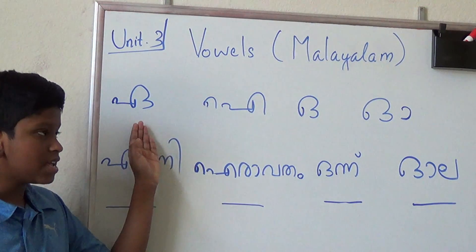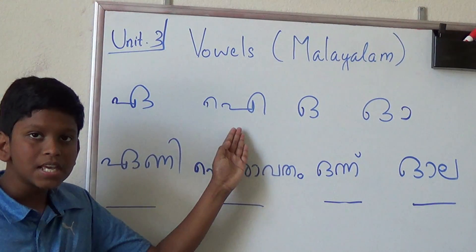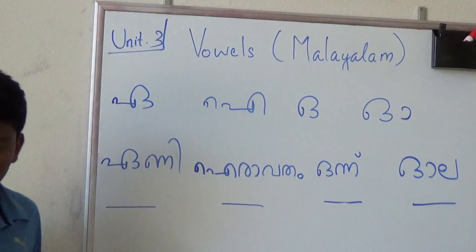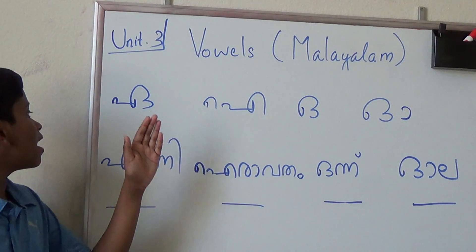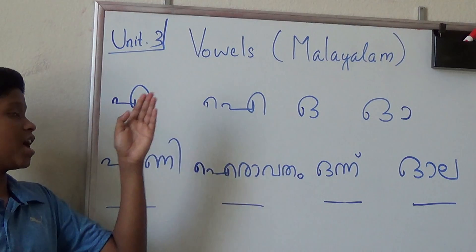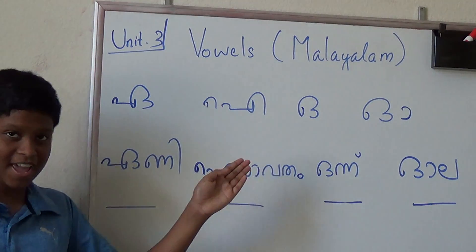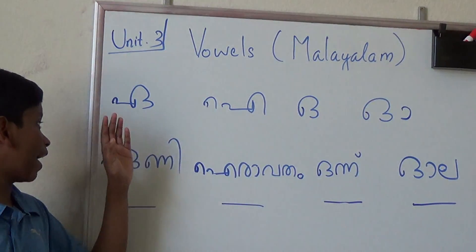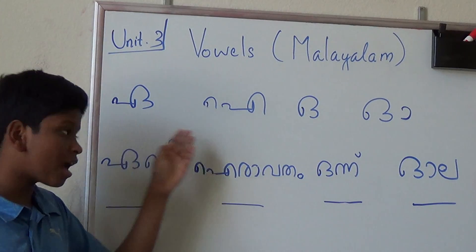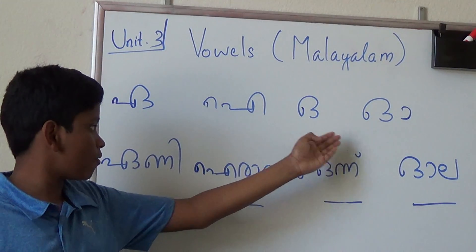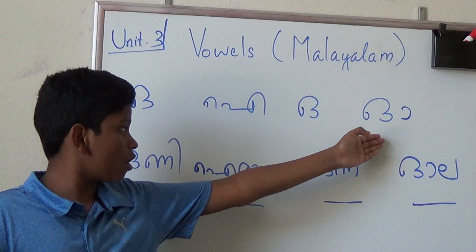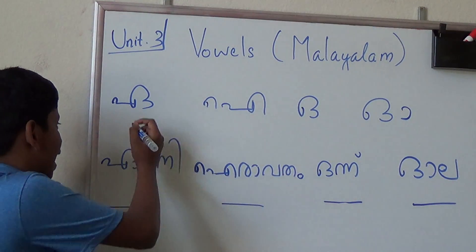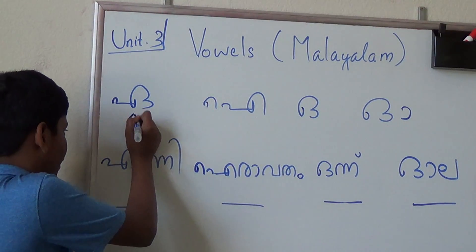The four vowels are A, I, O, and O. Let's go over that again: A, I, O, O. And maybe this might help you with A's — double A's.